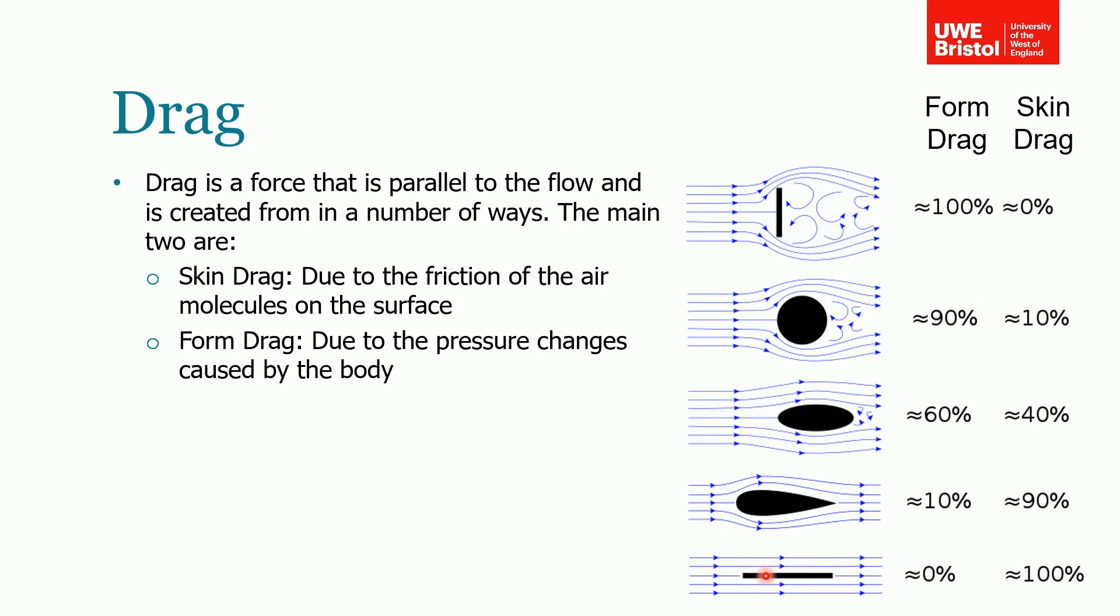You can see that this very thin plate which is parallel to the flow has next to no form drag because it's not really creating a wake in the flow. So therefore the drag will be made up almost entirely of the skin drag. This shape is still streamlined but it's going to have some small percentage of form drag. And as the object becomes less aerodynamic, then the percentage of form drag is going to increase and the percentage of skin drag will decrease.